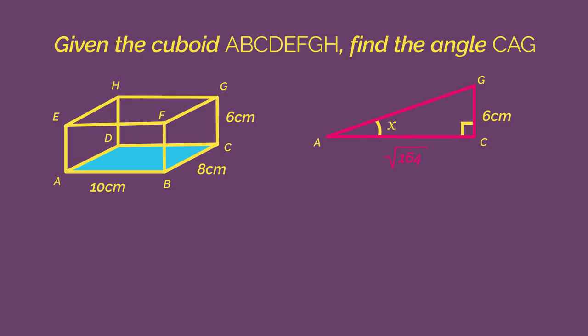So now that we know the length of AC, we can go back to the actual question. And we're now able to find the size of angle X using Sokotoa. 25.1 degrees.